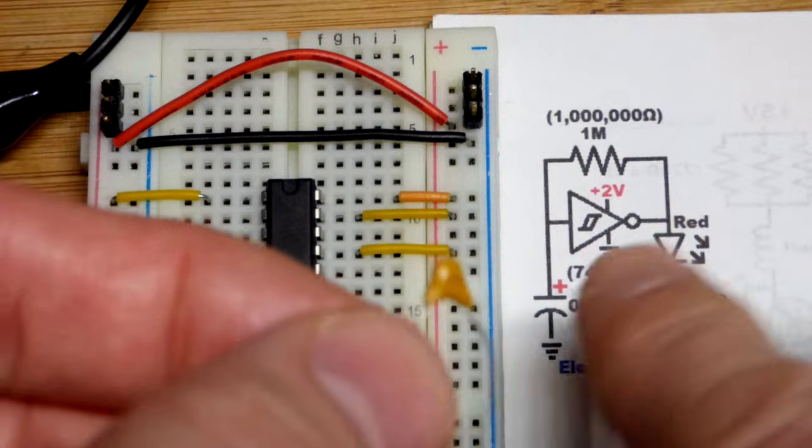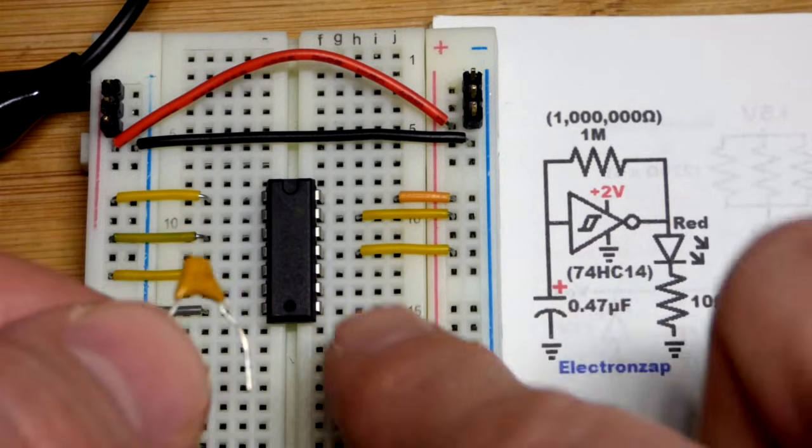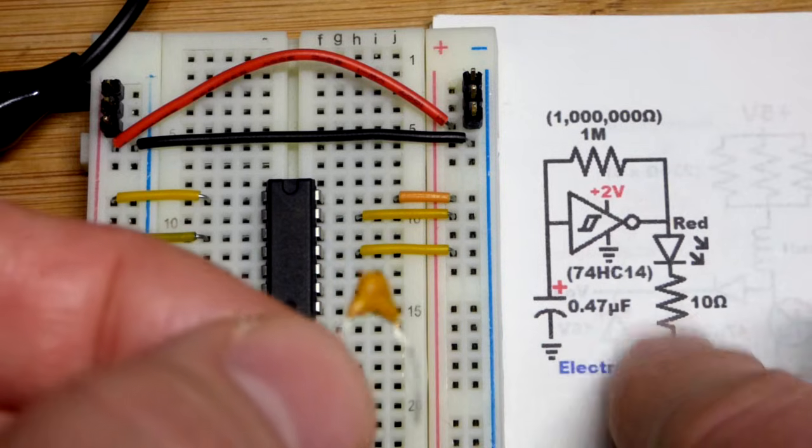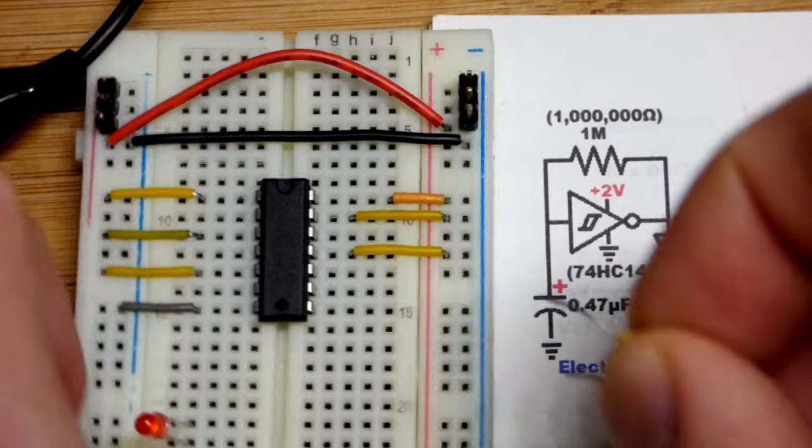This is a low-power integrated circuit, so we are going to use low values. 0.47 microfarad capacitor.